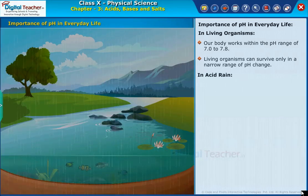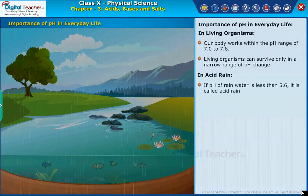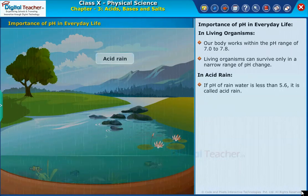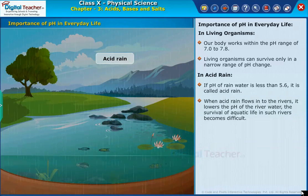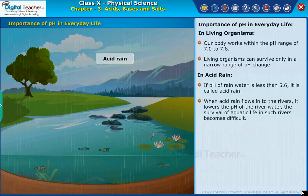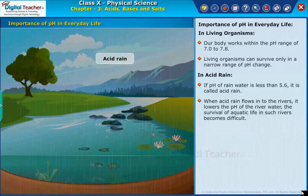In acid rain, if the pH of rain water is less than 5.6, it is called acid rain. When acid rain flows into the rivers, it lowers the pH of the river water. The survival of aquatic life in such rivers becomes difficult.